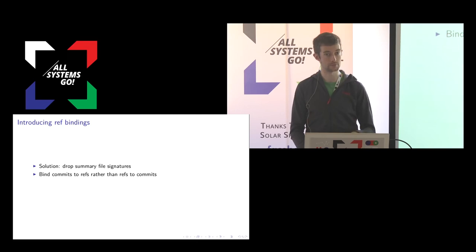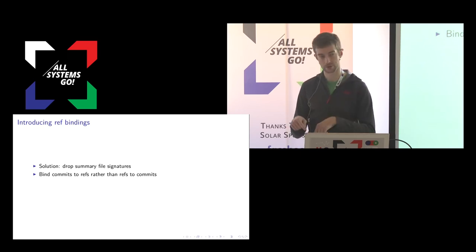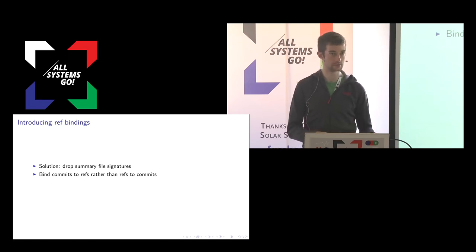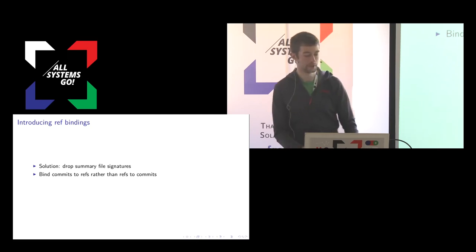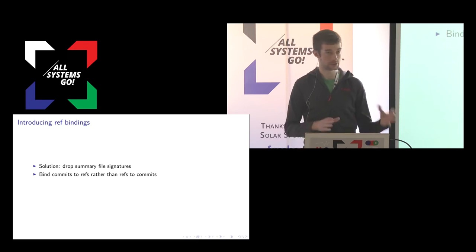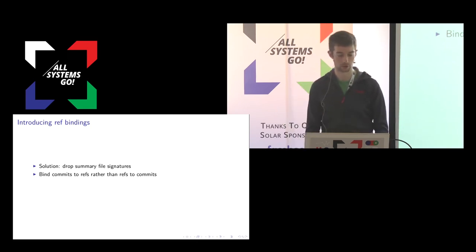You can do this because each commit in OS tree has metadata — date, author, commit message — just like Git commits, and this metadata is always signed by the person who built the repository. So if you put extra metadata in there saying this commit should be on this ref, and sign the whole lot, you can always check whether a commit you have downloaded is actually meant to be on the ref you thought you downloaded it from. This means that although the summary file is not trusted, you can verify everything you pull from it.